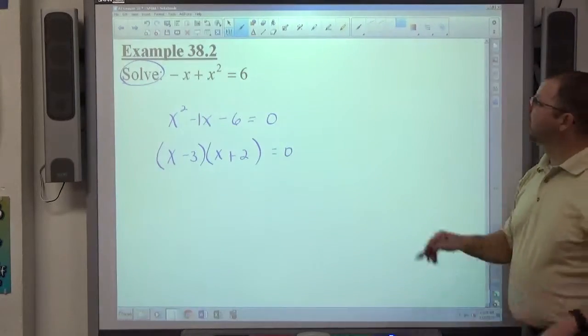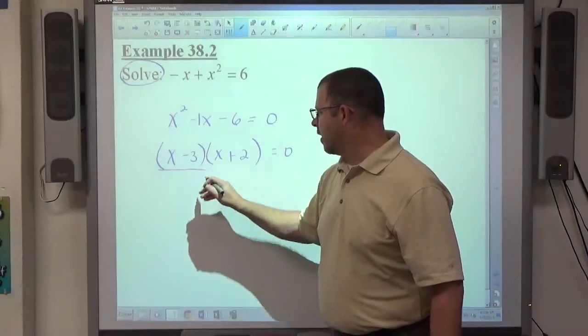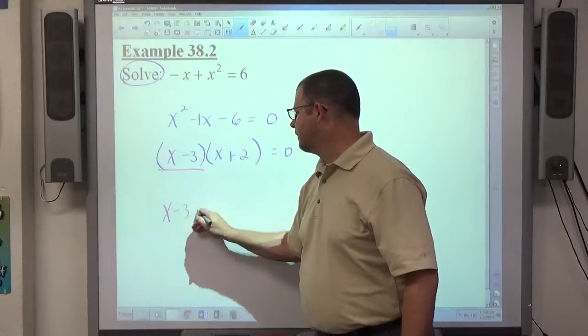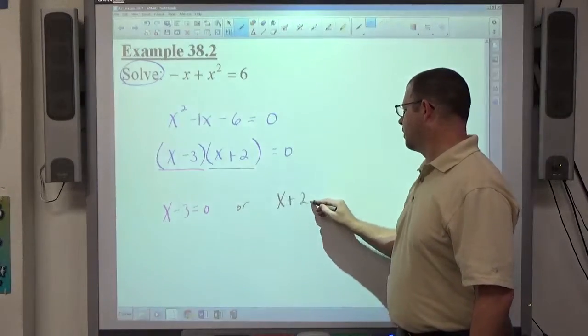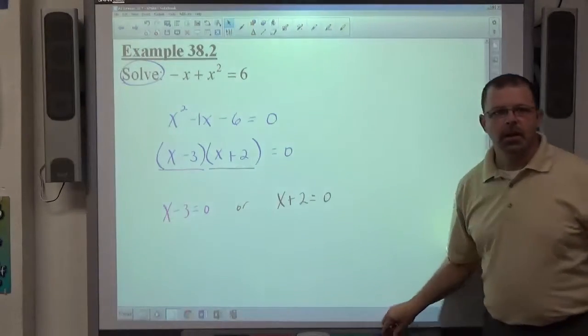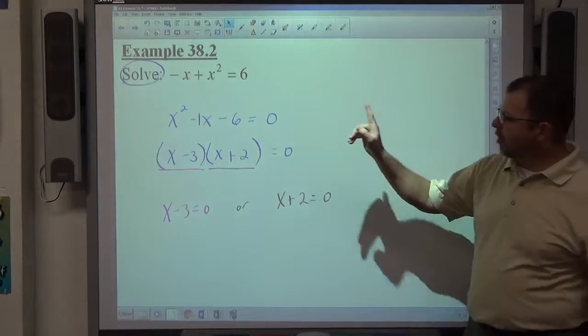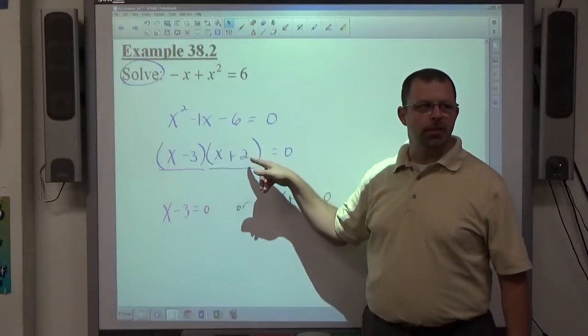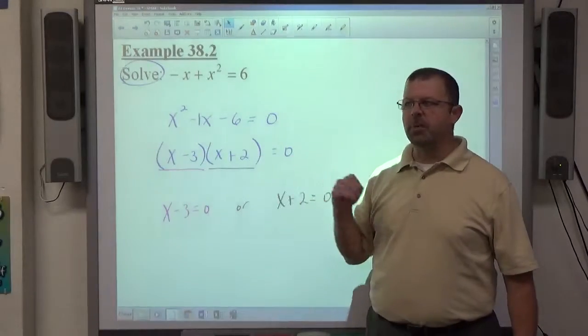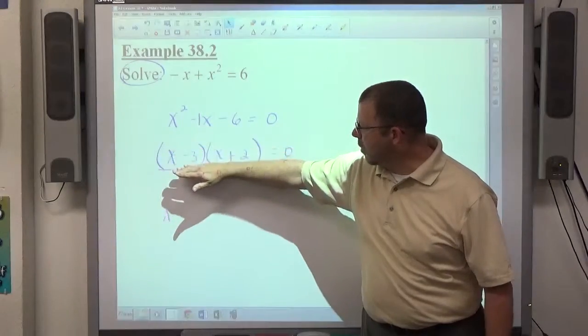And then, we simply apply the zero product property we learned in algebra last year, which is that x minus 3 has to equal 0, or x plus 2 has to equal 0. Let me just make sure we understand why that's true. I changed from a sum and difference expression into a product expression. Multiplication by zero makes zero. So, as soon as I change this from a sum and difference into a product,